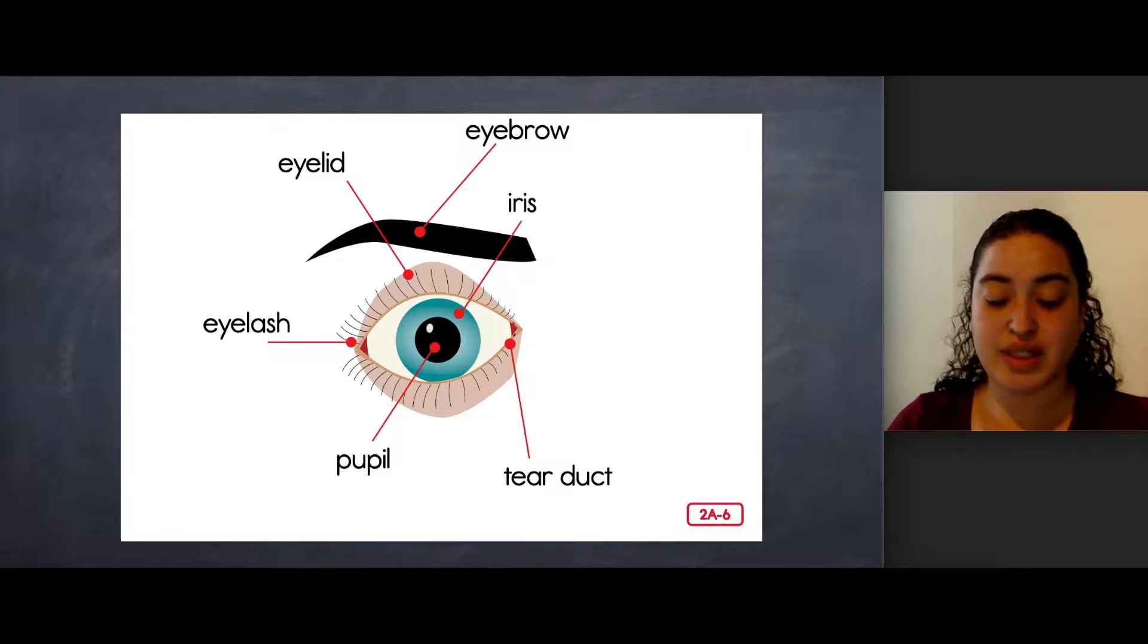Luckily, eyes can protect themselves with the help of two inside parts of the eye: the iris and the pupil.